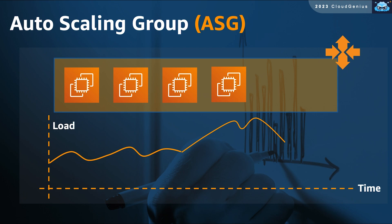ASG is here to rescue the situation. ASG will dynamically start creating other identical instances to increase the overall available computing power to cope with this spike in demand. We are back in control. The spike is over, and now the load drops.